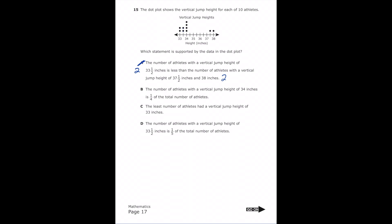Letter B says the number of athletes with a jump height of 34 inches is one-fourth of the total athletes. Checking: 34 inches has 4 dots, and there are 10 athletes total, giving the fraction 4/10. Simplifying by dividing both by 2 gives 2/5, which is obviously not one-fourth. So marking out letter B.